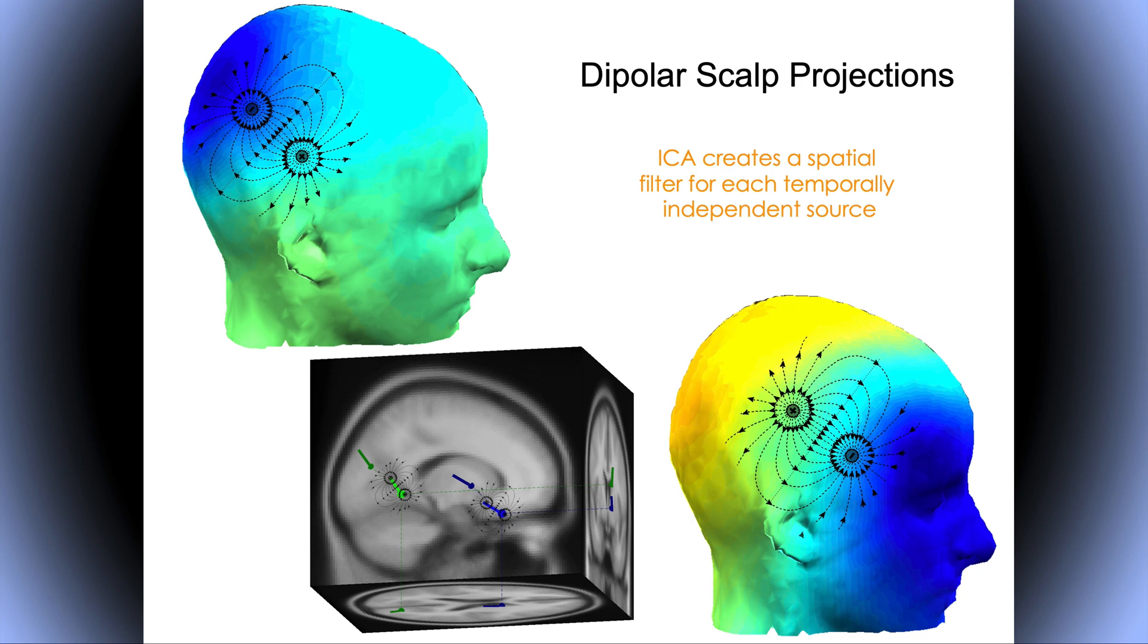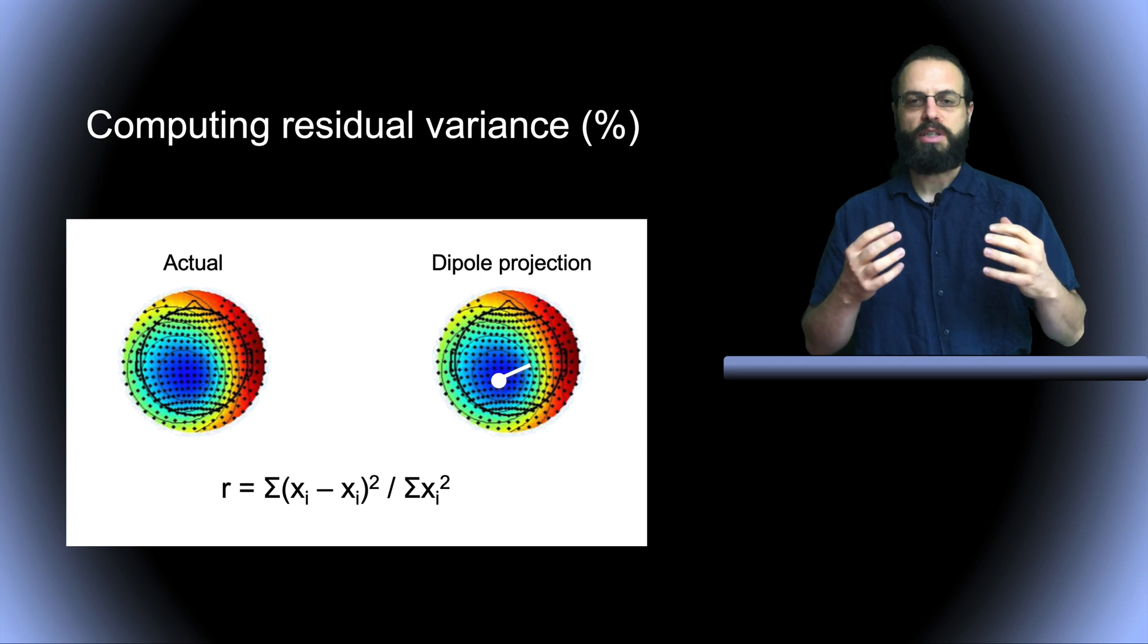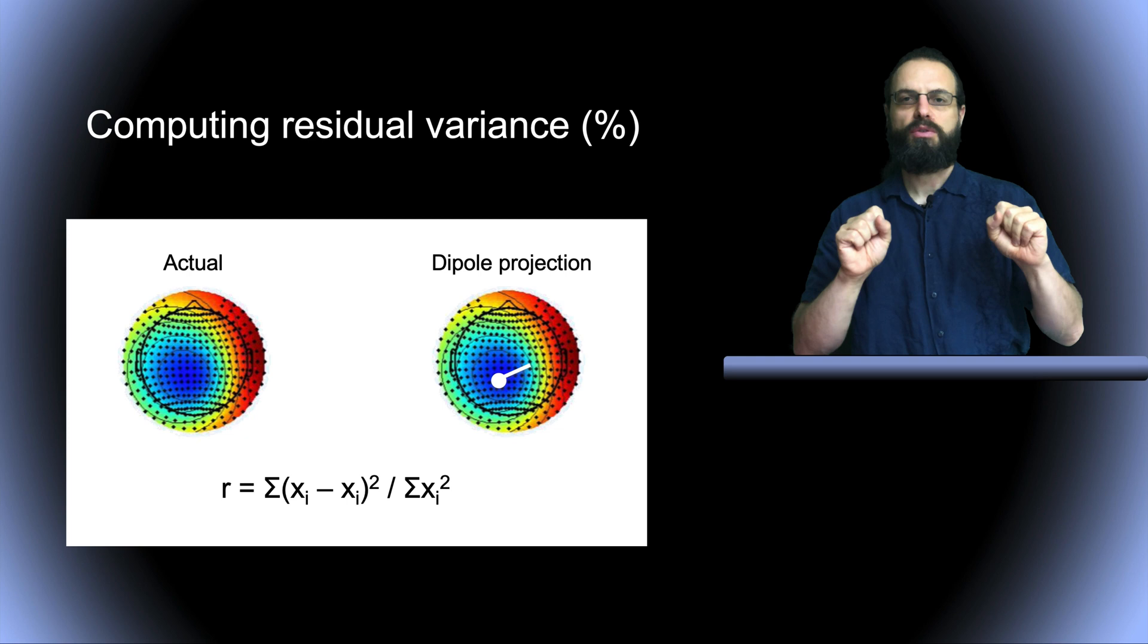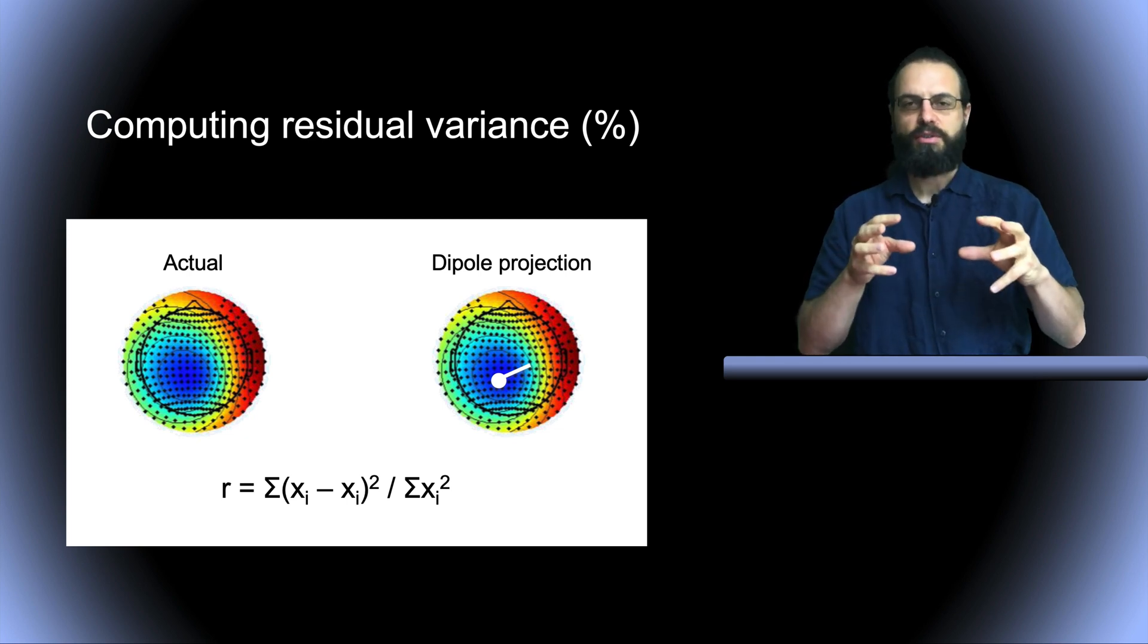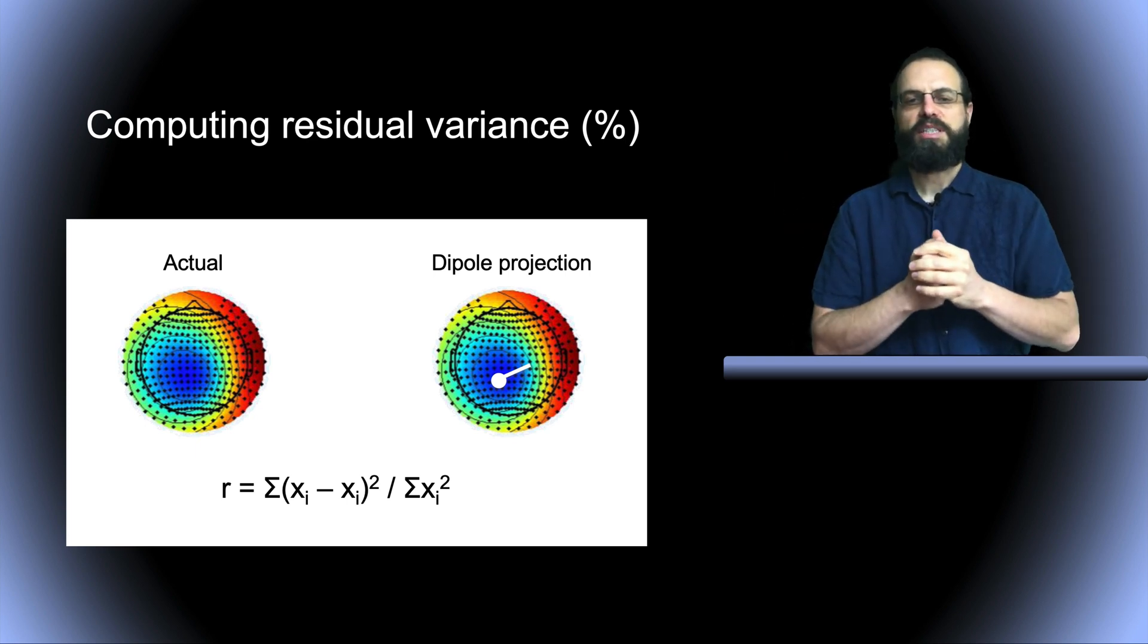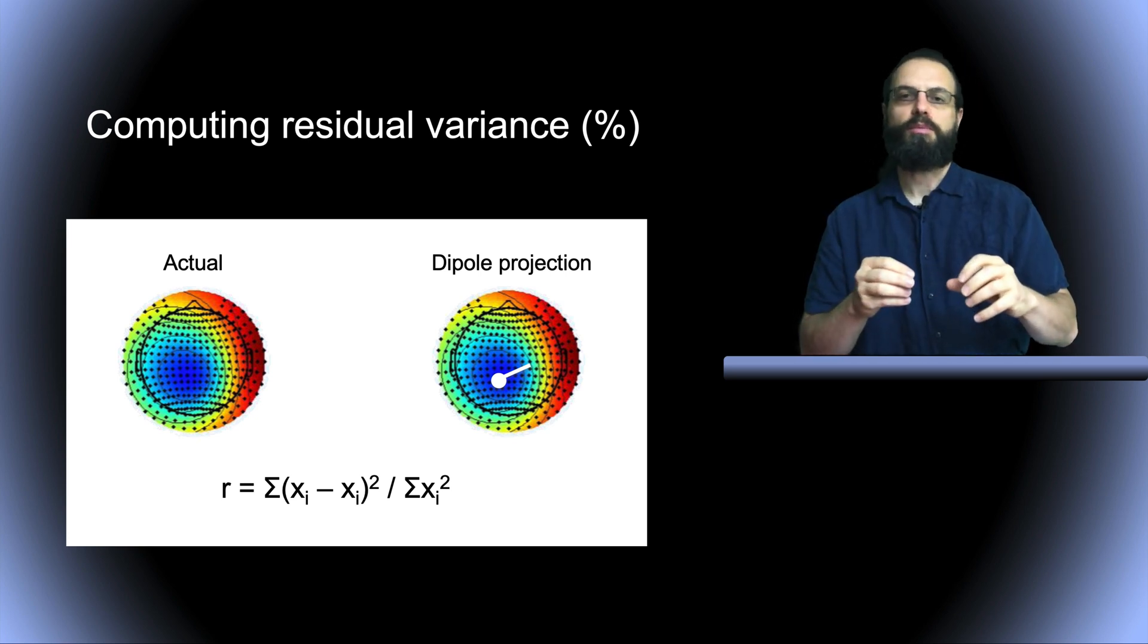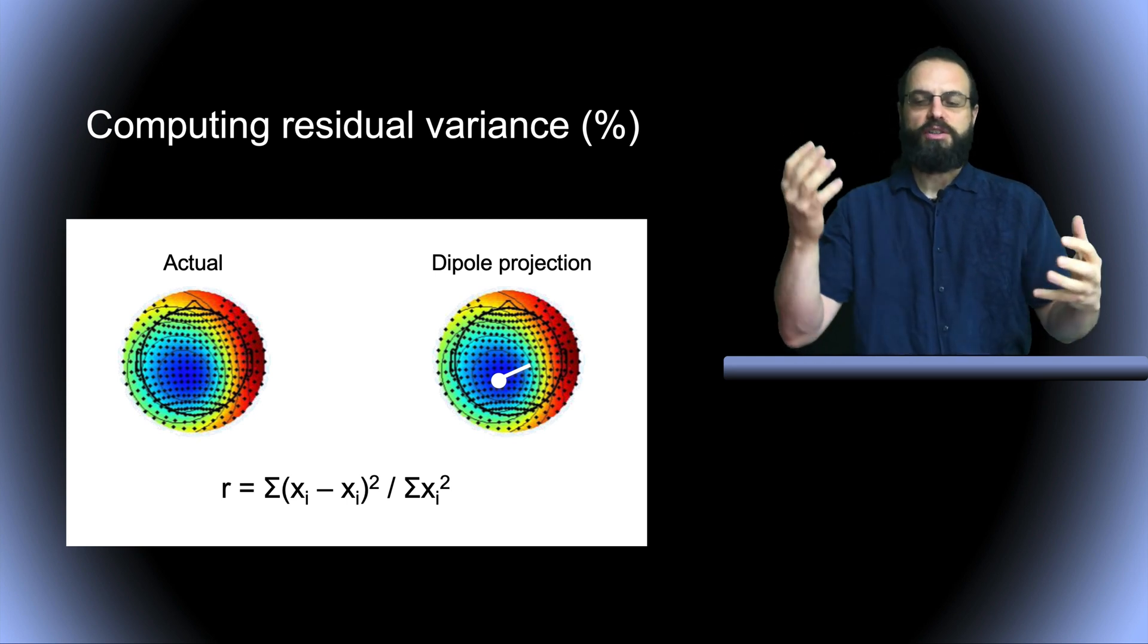ICA creates spatial filters for each temporally independent source brain source. To do this, we need to compute residual variance. On the left here, we have the actual data. On the right, we have the dipole projection. What we're going to do to see if the ICA component can be modeled using a single dipole is subtract the two maps and see what's left. That's called the residual variance. If the fit is really good, the residual variance is very low, a number between 0 and 100%. If it's really bad, the residual variance is very high.